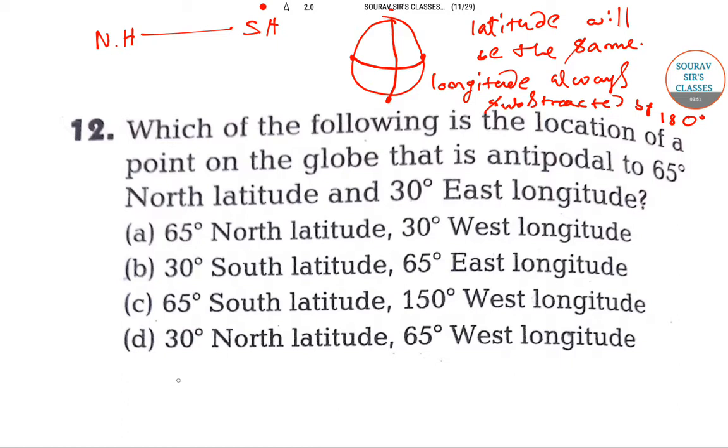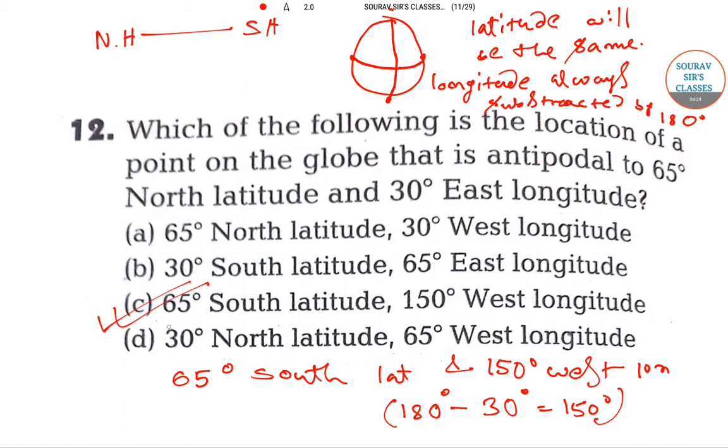It will be 65 degree south latitude and 150 degree west longitude. Why? Because we must subtract 180 degrees minus 30 degrees, and the answer is 150 degrees. So in this question, option C is correct: 65 degree south latitude and 150 degree west longitude. That is the answer.